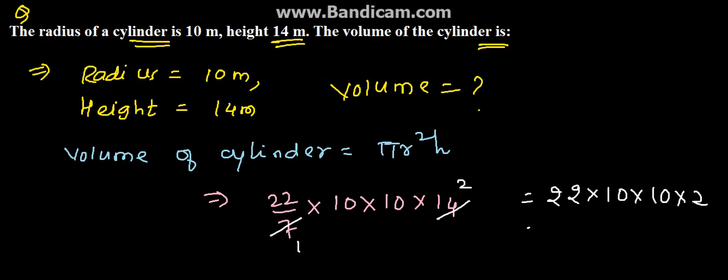So it is 4400 meter cube. Therefore we can say that 4400 meter cube is the volume of the given cylinder. Thank you.